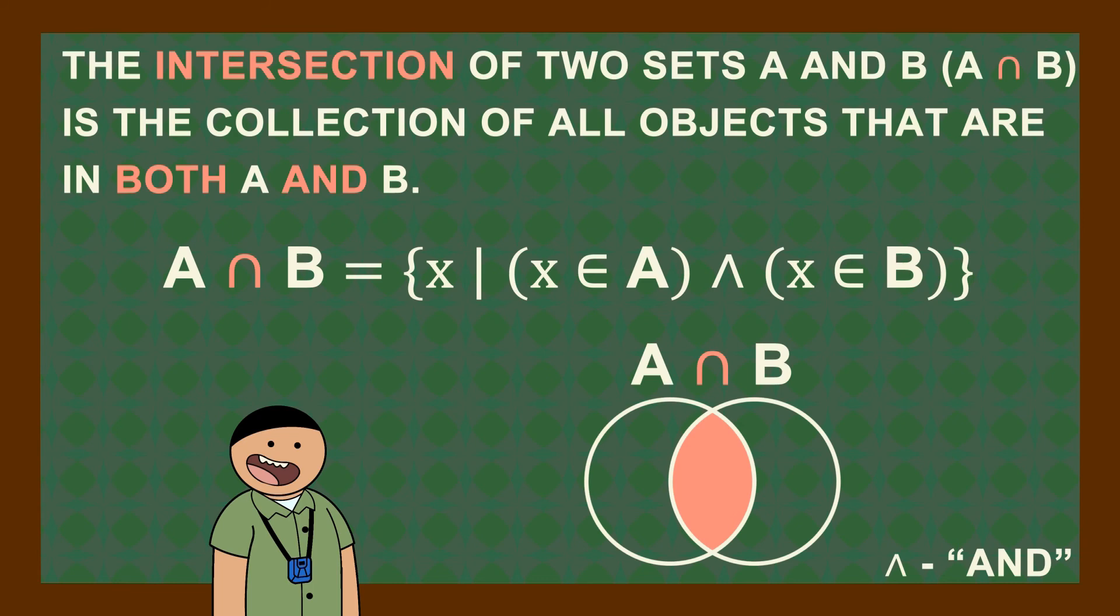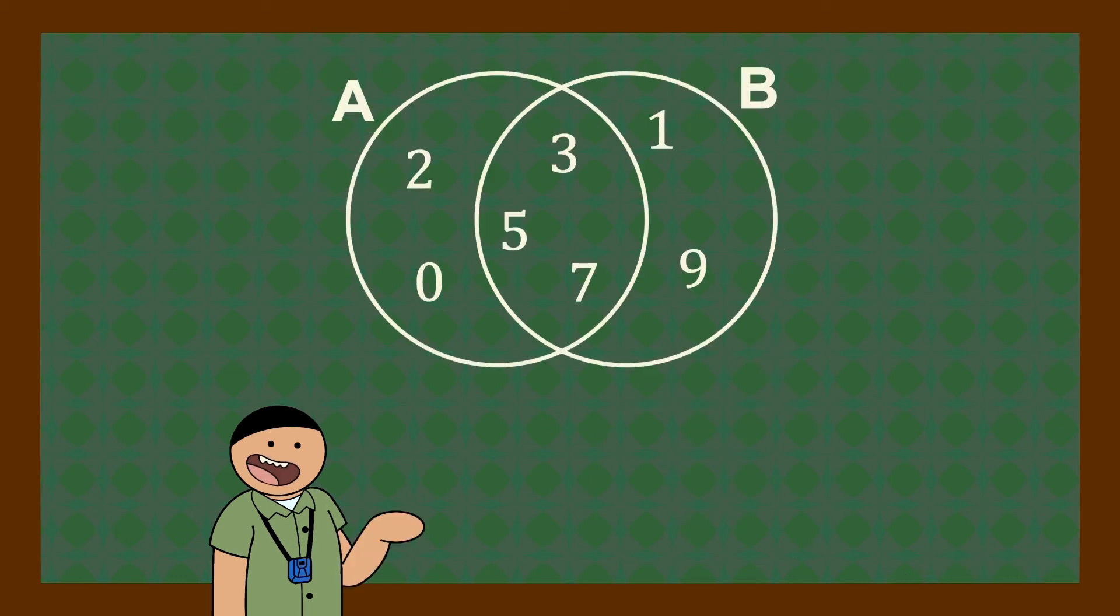The intersection of two sets A and B is the collection of all objects that are in both A and B. More like something in common in the two sets. From the sets we have right now, A intersect B is 3, 5, 7.